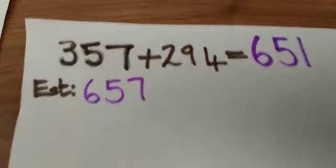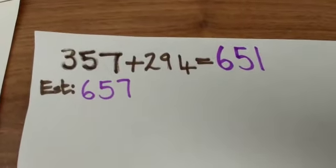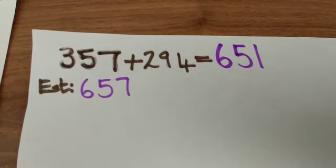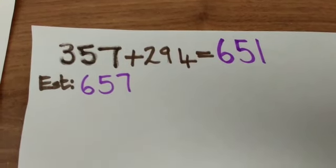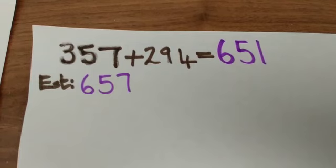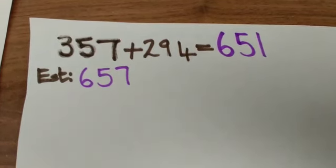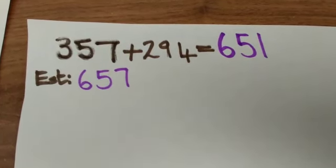So now I can go back to my sum. And I know that 357, add 294, equals to 651. And you can see we were very, very close to our estimate of 657.